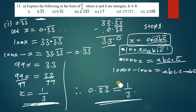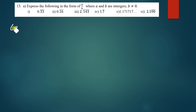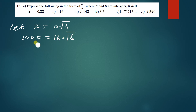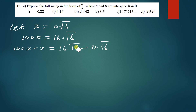Let's move on. Let x = 0.16̄. We move the point to cover the repeating numbers. We have two repeating digits, so we multiply by 100. Thus 100x = 16.16̄.